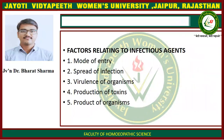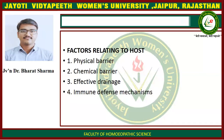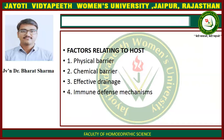Factors relating to infectious agents: first, mode of entering; second, spread of infection; third, virulence of organism; fourth, production of toxins; and fifth, products of the organism. Factors relating to the host: first, physical barrier; second, chemical barrier; third, effective drainage; and fourth, immune defense mechanism.